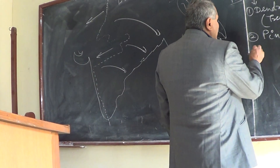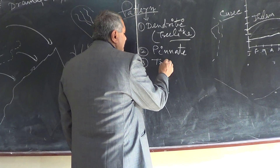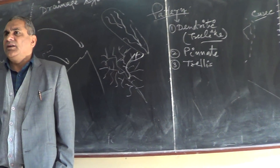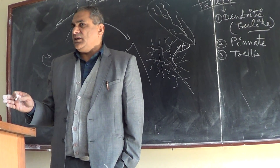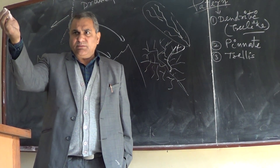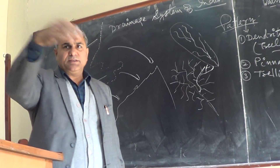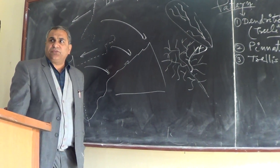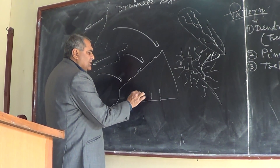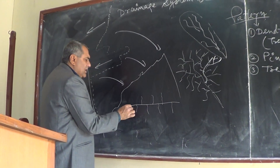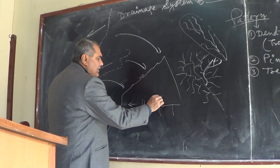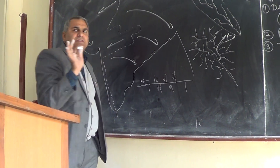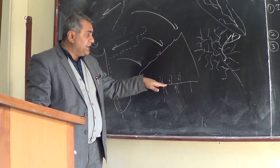The third pattern is the trellis pattern, generally found in rifted and fractured areas. For example, the Narmada river flows through a rifted valley and has only perpendicular branches joining from either side. These perpendicular branches characterize trellis drainage.